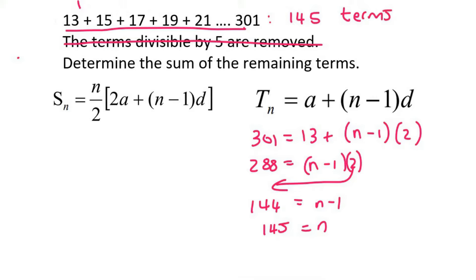So we can go work out the sum of all of those numbers now by saying sum of 145 terms equals to 145 over 2, 2 times, now A is 13, 145 minus 1, and our common difference is 2. And so we end up with 22,765.